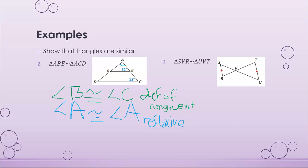Going back to write my reasoning: angle B is congruent to angle C by the definition of congruence, and angle A is congruent to angle A by the reflexive property. Therefore, triangle ABE is similar to triangle ACD by AA similarity.